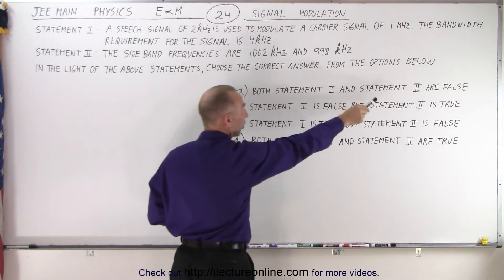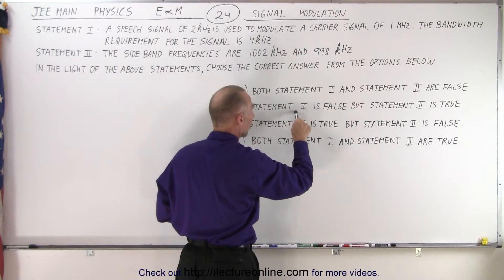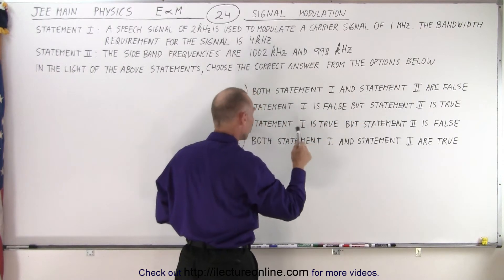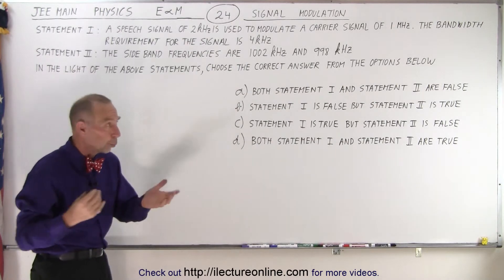So either both statements are false, both statements are true, one statement - statement 1 is false and statement 2 is true, or statement 1 is true and statement 2 is false. So what is it?